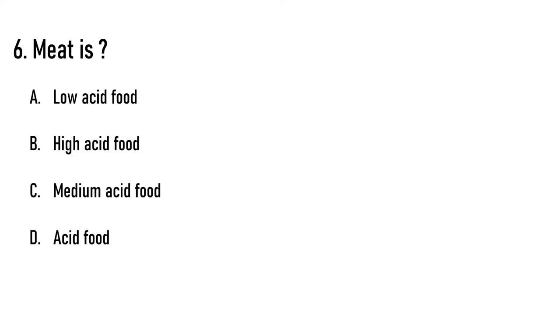Meat is a dash type of food. Options are A) low acid food, B) high acid food, C) medium acid food, D) acid food. The correct answer is that meat is a low acid food. Give two examples each of high acid food, medium acid food, and acid food in the comment box.